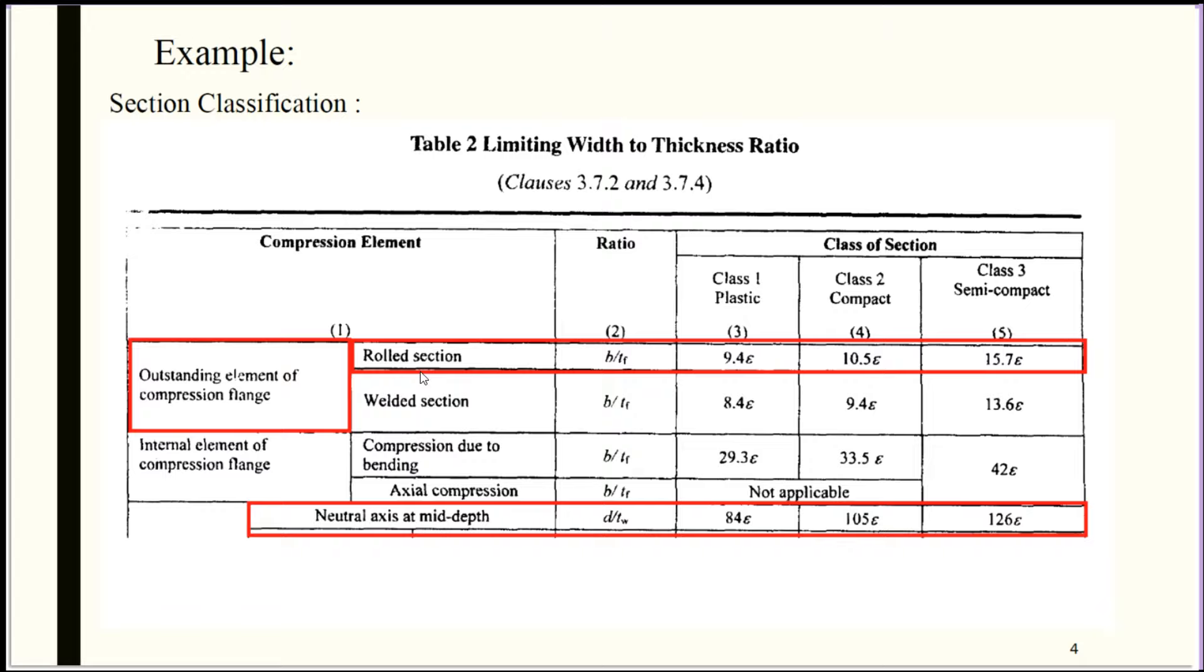In the I-section, the top flange is the compression flange and the length of flange available after the web is called the outstanding element. When we take BF/TF ratio, we need to consider half the length of the flange.